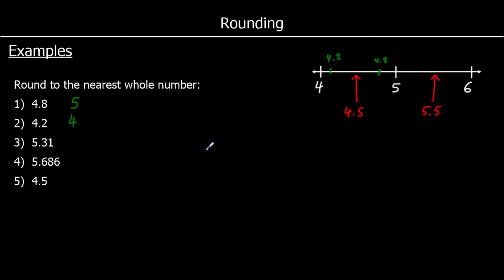5.31 — that's just above 5. So it's over here somewhere. It's less than 5.5, so it's closer to 5 than it is to 6. So to the nearest whole number, it is 5.